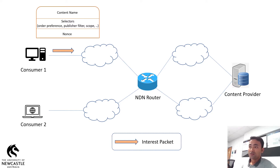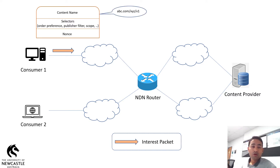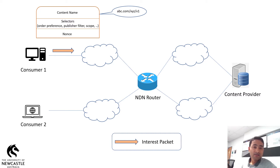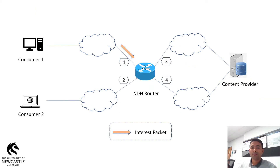The format of the interest packet is something like this: the first field represents the content name, which is unique — for example, abc.com/xyz/v1. Here abc.com is a domain name, xyz is a file name, and v1 is the version number of that file. There can be other fields such as selectors and nonces.